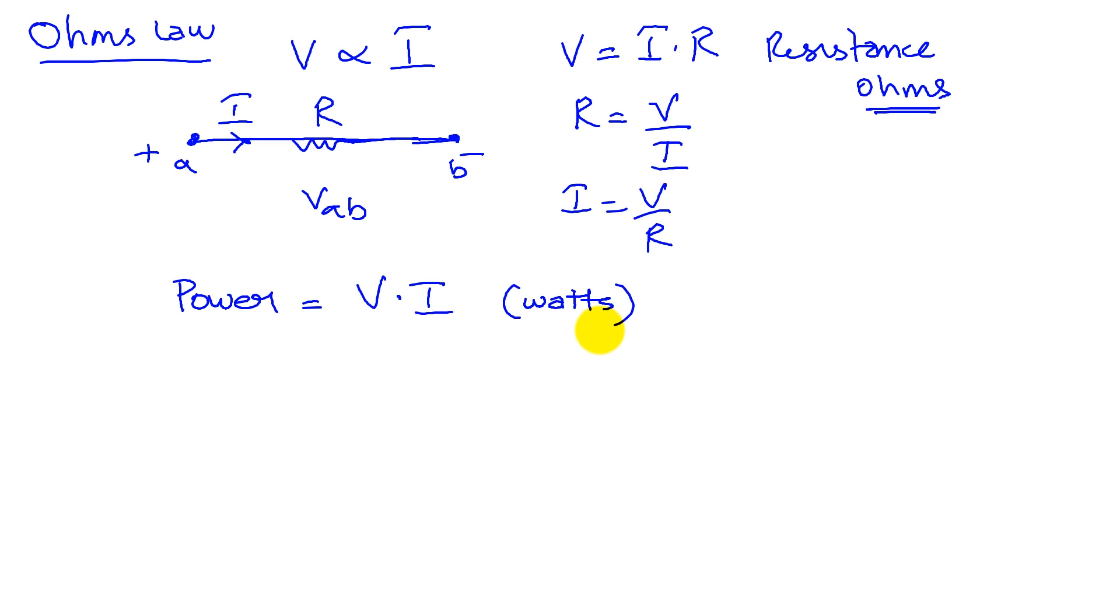And the interesting thing is that we can actually derive this as being joules per second. And this is simply because the volt, the unit for voltage is joules per coulomb, and the units for current are coulombs per second. So, the units for power is joules per second, which is also called watts.